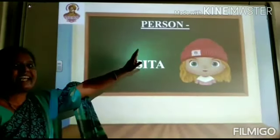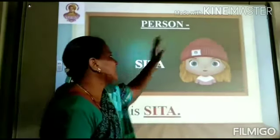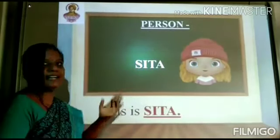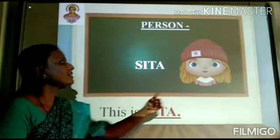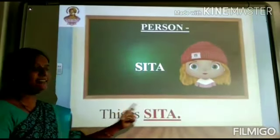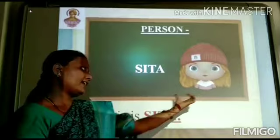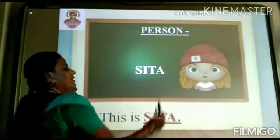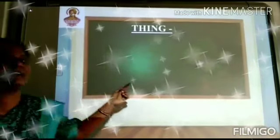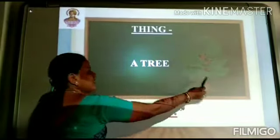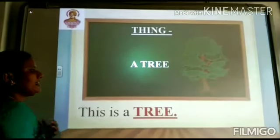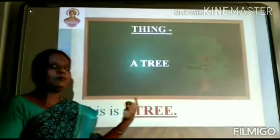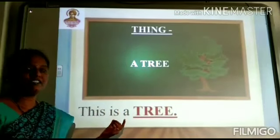Shall we see some examples for this? First we shall see the example for a person. A person could be Sita, Raju, Ram. This is Sita. Sita is the name of this girl. Sita is a proper noun. Next we have thing. Thing could be a tree. This is a tree. Tree is a thing. Many more examples you can list for things also — box, pencil and so on.